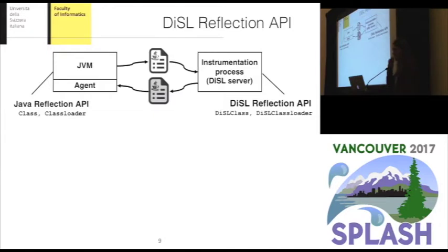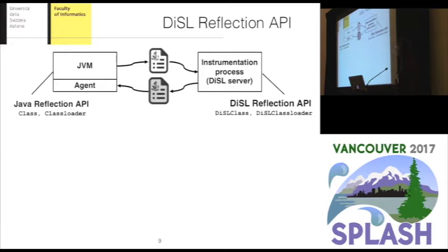Our extension makes it possible for the Diesel server to access reflective supertype information — useful when the instrumentation depends on which are the supertypes of the class the server receives. Just as in the JVM one would access the Java Reflection API to get information about supertypes, in the Diesel server the instrumentation logic can access a new API we have defined, called the Diesel Reflection API. For each class loaded by the target JVM, we create a new instance of a DieselClass, whose goal is to provide access to the reflective supertype information accessible by querying a JVM class in the Java Reflection API.